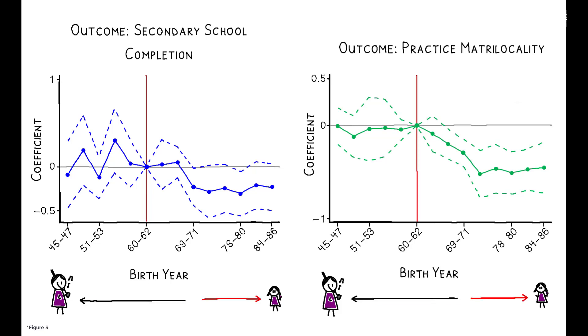But for younger cohorts, the pension program reduced both educational investment and the likelihood of practicing matrilocality as adults. Notably, the educational attainment of sons in matrilocal households was unaffected.